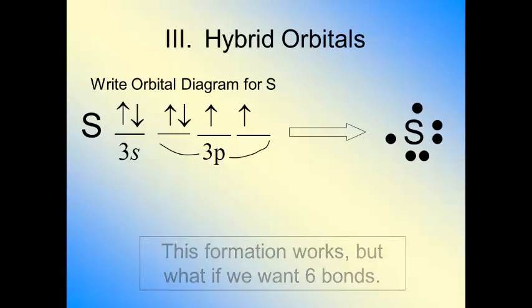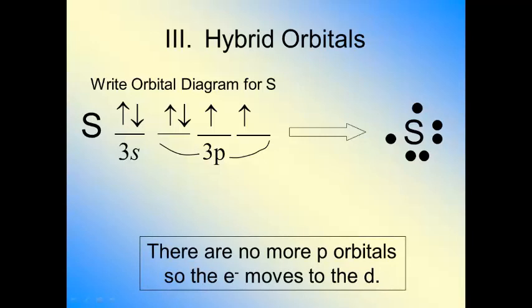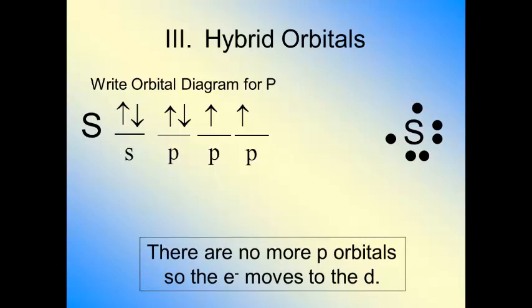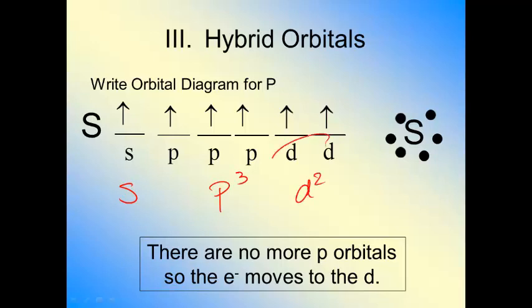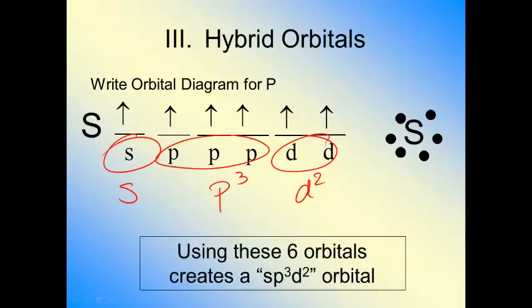There's no more p orbitals, so that means we've got to jump up to the d. If we jump our electrons up to the d, we can move one here and one there. As our electrons move around, forming our sp3d2, two d's, three p's, one s. So it's an sp3d2 hybridization.